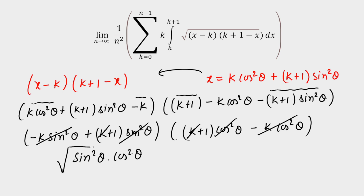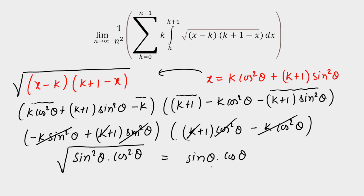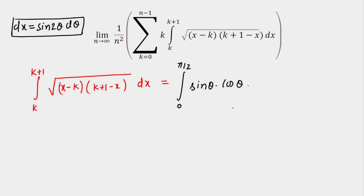Taking the square root of sin²θ·cos²θ gives sin θ·cos θ (mod removed since θ is between 0 and π/2, both positive). After substitution, the integral becomes ∫₀^{π/2} sin θ·cos θ · sin 2θ dθ. Multiplying and dividing by 2, we write 2·sin θ·cos θ = sin 2θ, giving (1/2)∫₀^{π/2} sin²(2θ) dθ.